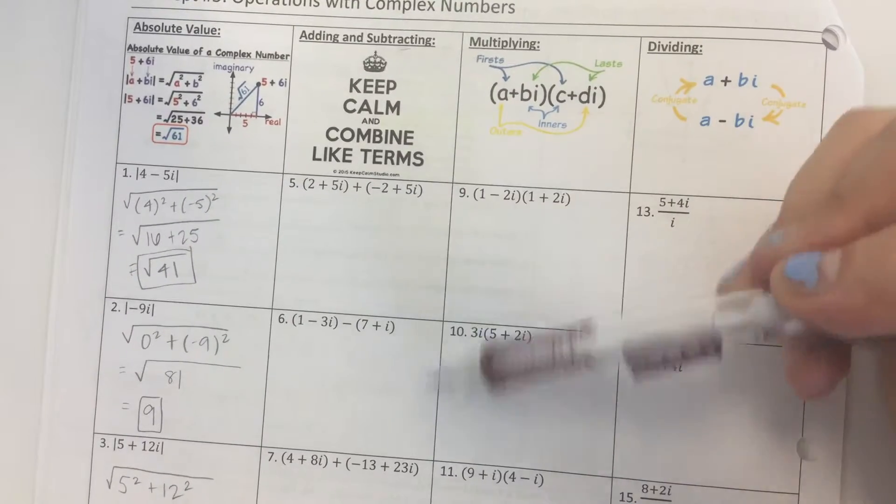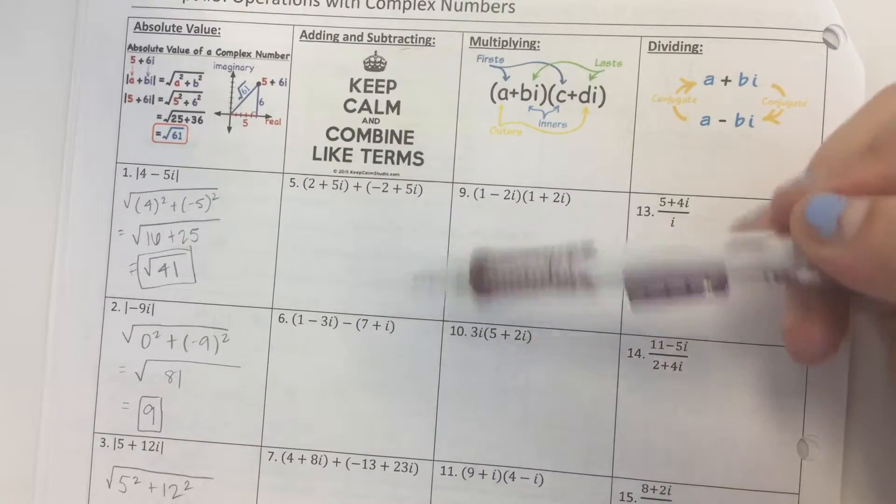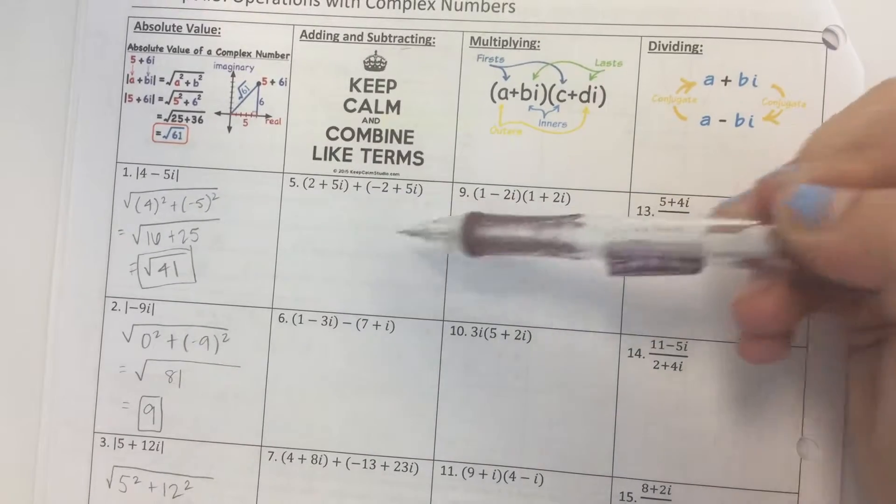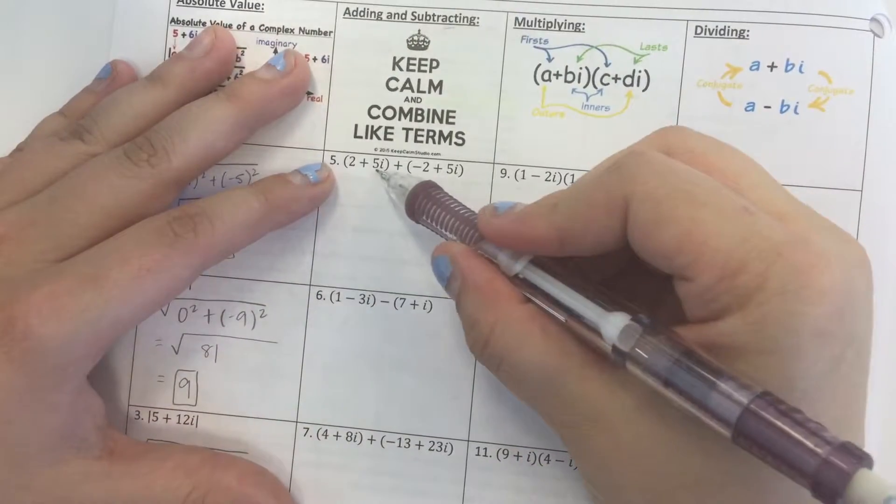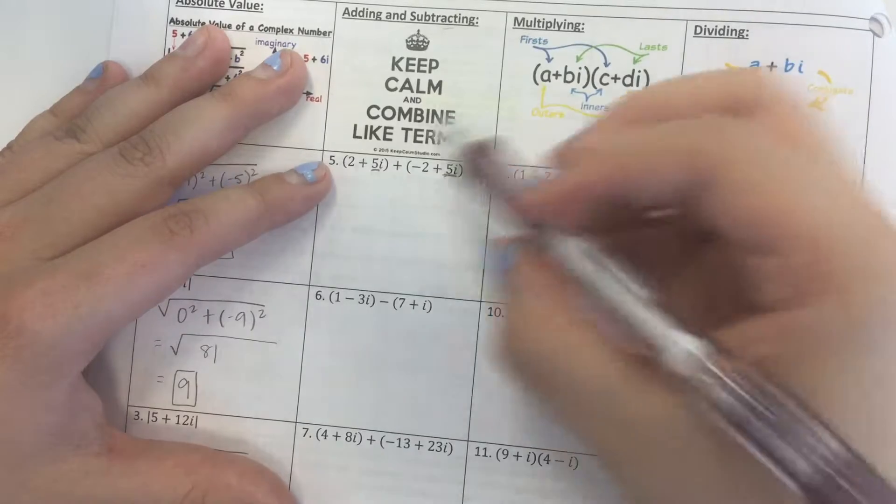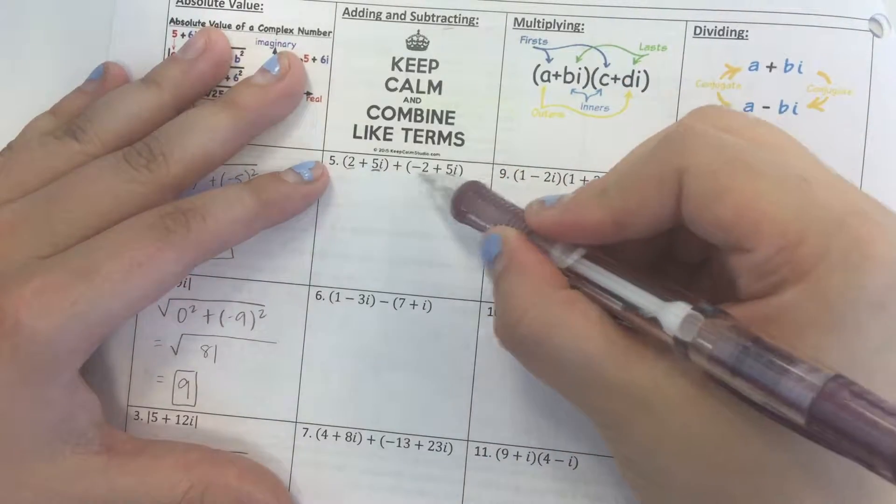Just like adding polynomials or expressions with variables, we're going to combine like terms. So what you're looking for is things with i's in them, you're going to combine them, and things without i's in them, you're going to combine them.